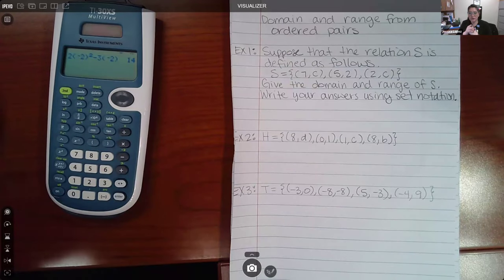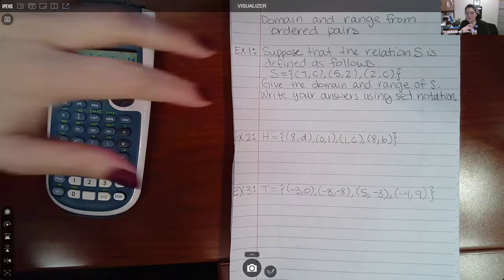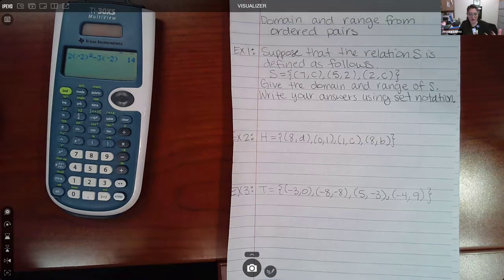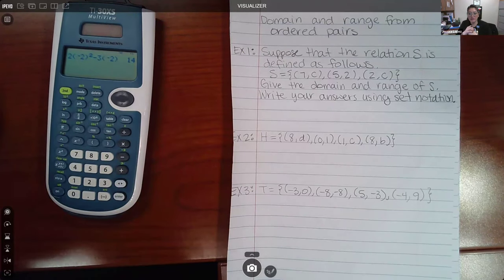This topic is domain and range from ordered pairs. The directions are like this: suppose that a relation S is defined as follows, and then they define the function. Then they ask you to give the domain and range of that particular relation, and write your answers using set notation.